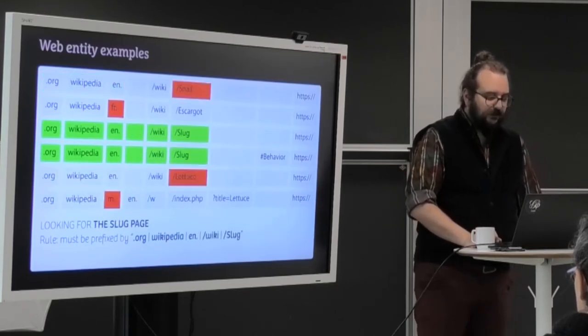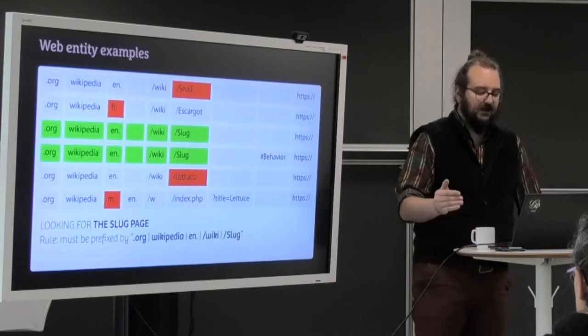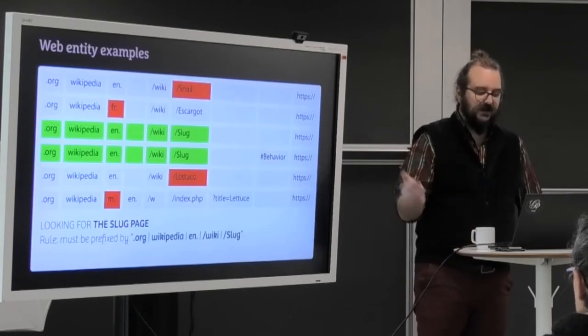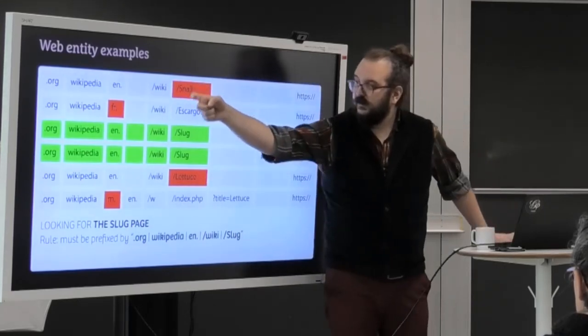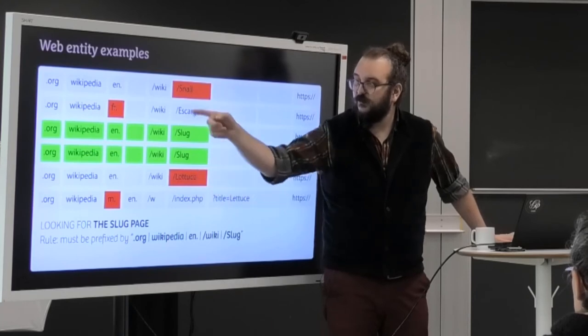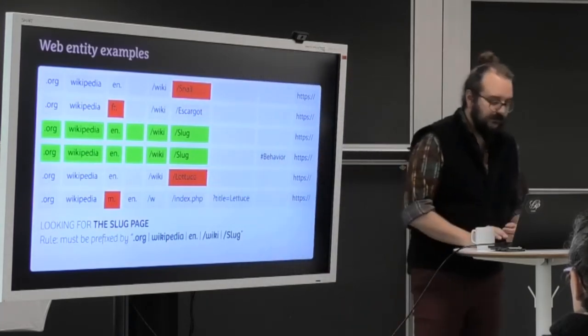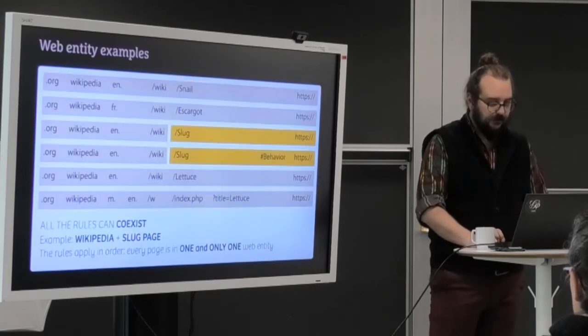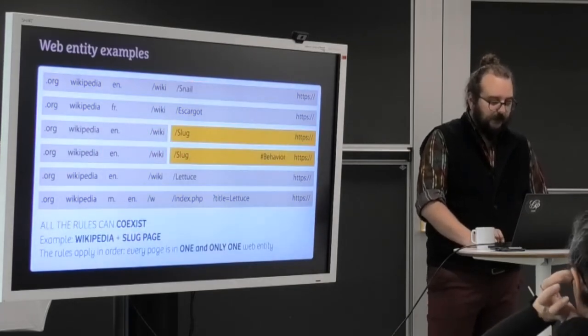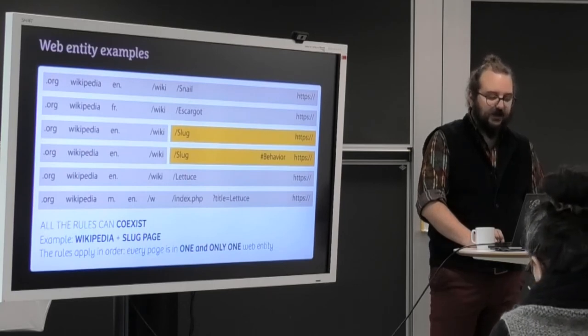Now, let's say we want the Slug page. So let's say we want .org Wikipedia EN slash wiki slash slug. So each of the other pages miss the prefix for different reasons. Sometimes the subdomain, sometimes something in the path. So this one works well.